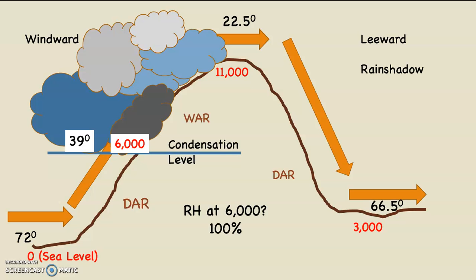So the relative humidity at 6,000 feet is 100%. How do we know? There's a cloud. What's the relative humidity at the top of the mountain, 11,000 feet? If you look, you can see the cloud is touching the top of the mountain. If the cloud is touching the top of the mountain, there's a cloud at the top of the mountain. Any place there's a cloud, relative humidity must be 100%.